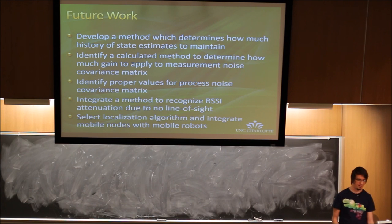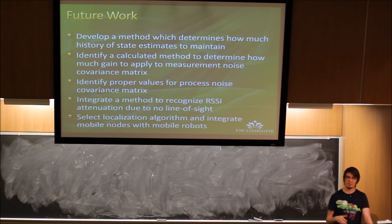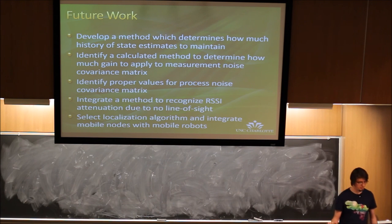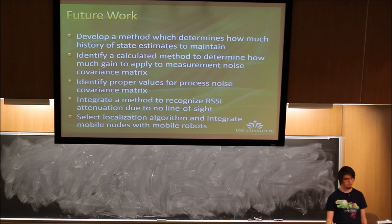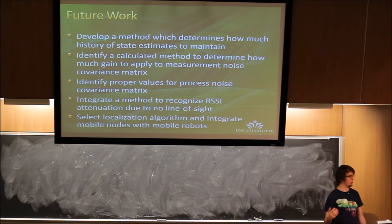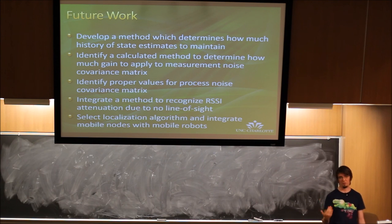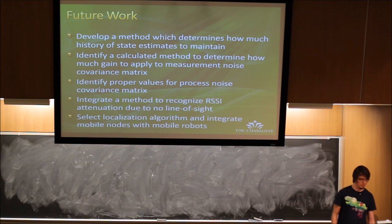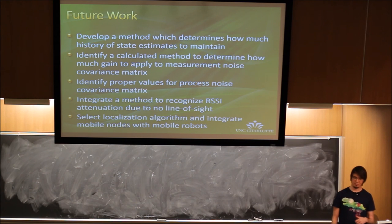We also need to actually quantify the process noise Q matrix, which currently just has ones as a placeholder. We need to integrate a method to recognize RSSI attenuation due to no line of sight — multipath is one issue, but you can also pass through a door or wall and still see the signal, so we need to rule out those measurements. Finally, we need to select an algorithm for localizing the mobile node, such as integration with a SLAM algorithm on a mobile robot.